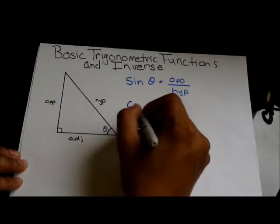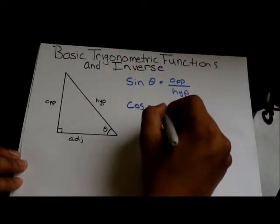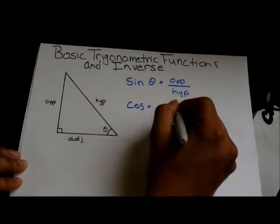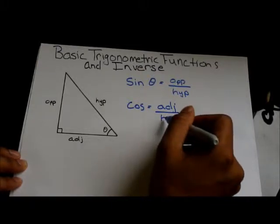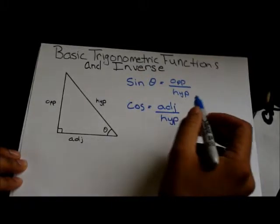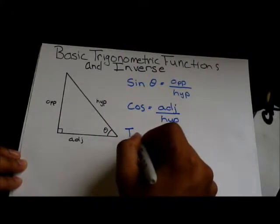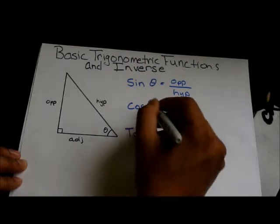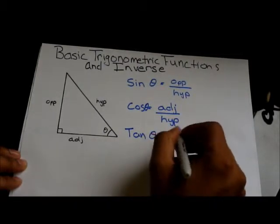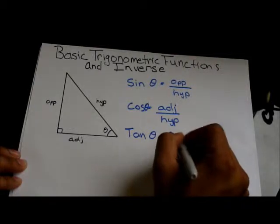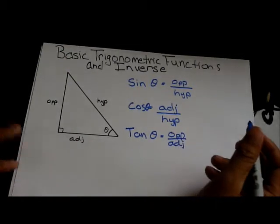Then we have cosine theta is equal to the adjacent length over hypotenuse. I just use three letters because it's faster. Don't have that much time when you're doing this on an exam. And remember the theta. So, tan theta is equal to the opposite side over the adjacent side.